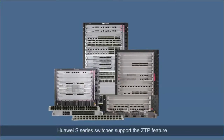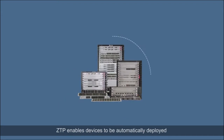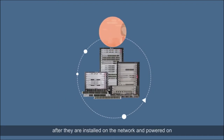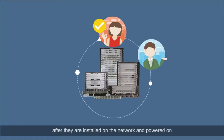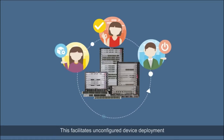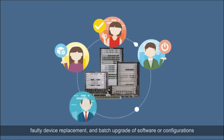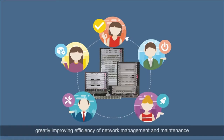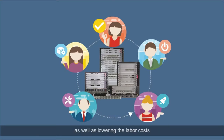Huawei S-Series switches support the ZTP feature. ZTP enables devices to be automatically deployed after they are installed on the network and powered on. This facilitates unconfigured device deployment, faulty device replacement, and batch upgrade of software or configurations, greatly improving efficiency of network management and maintenance, as well as lowering the labor costs.